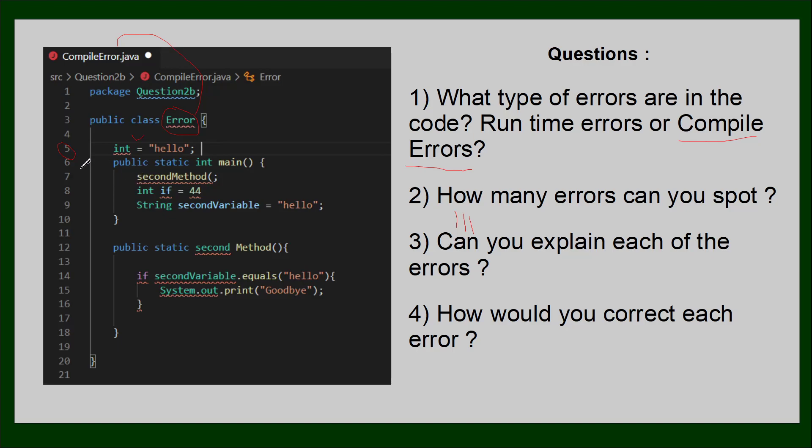On line six everything is fine. On line seven we can see that there are two errors there. First of all, we're missing that bracket, so we need to add that bracket. Also, there is no such thing as second method. The computer will not be able to find it. The only method we have is the method method, so we would need to get rid of that second part for the computer to link those up.